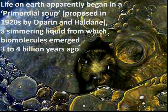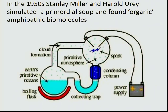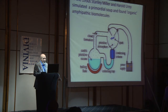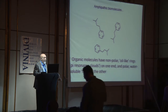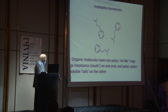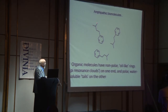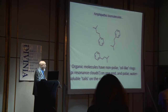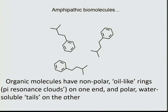Life on Earth apparently began in a primordial soup, proposed in the 1920s by Oparin and Haldane — a simmering liquid from which biomolecules emerged billions of years ago. In the 1950s, Miller and Urey simulated a primordial soup and found organic amphipathic molecules by creating the conditions present in the primordial soup, including electrical sparks for lightning. They found organic amphipathic biomolecules — the building blocks of living materials.